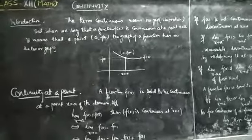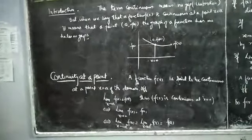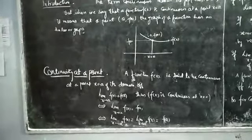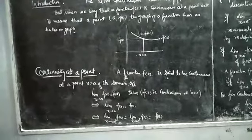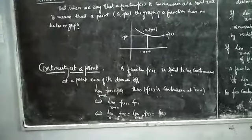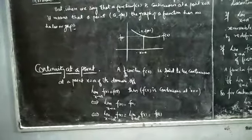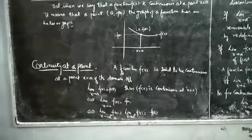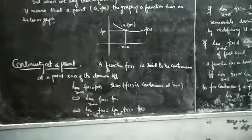A function f(x) is said to be continuous at a point x equal to a of its domain if and only if the limit as x tends to a of f(x) is equal to f(a). Thus f(x) is continuous at x equal to a if and only if the left-hand limit equals the right-hand limit equals f(a), i.e., limit x→a⁻ f(x) = limit x→a⁺ f(x) = f(a).